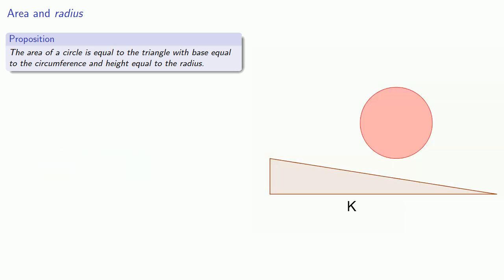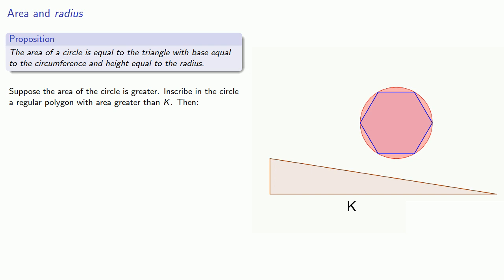Suppose the area of a circle is greater. Inscribe in the circle a regular polygon with area greater than K. The area of this polygon is equal to that of a triangle with base equal to the polygon's perimeter, and the triangle's height will equal the apothem, the perpendicular to the side drawn to the center.